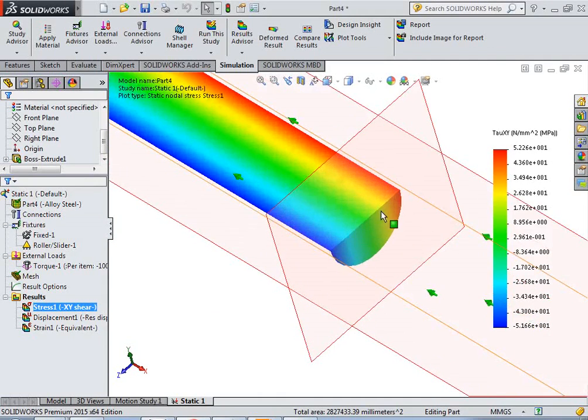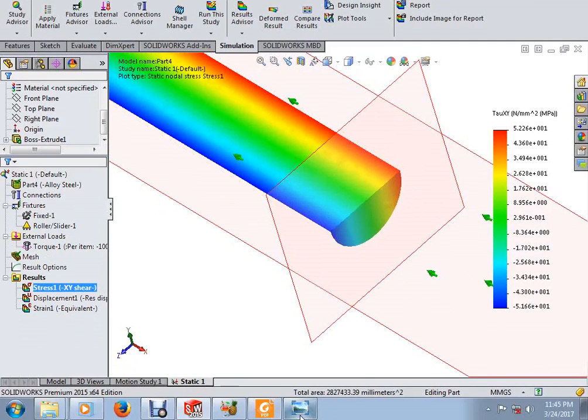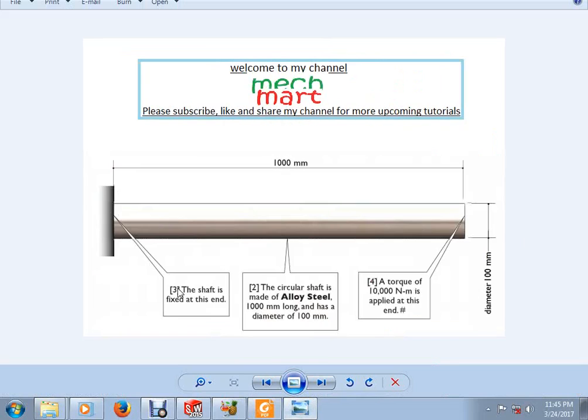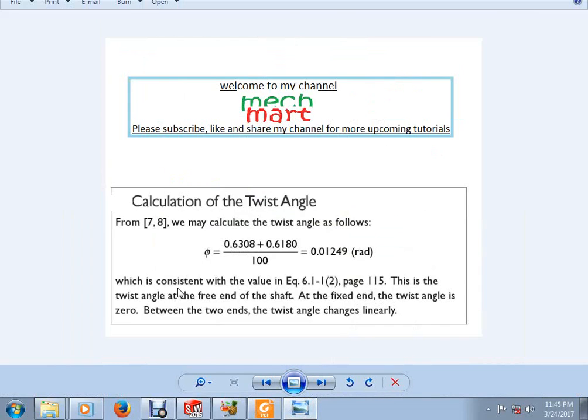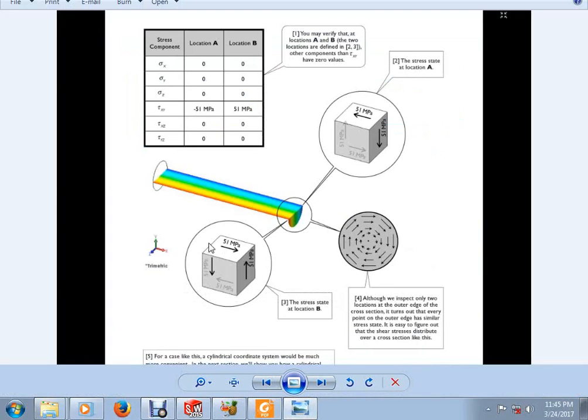So, we can plot the shear stress at this point, at point A and point B. Please see the graph here. If you consider this point B, the shear stress along this is 51 MPa in this direction, but at this direction, the shear stress is same in magnitude but in the negative direction.